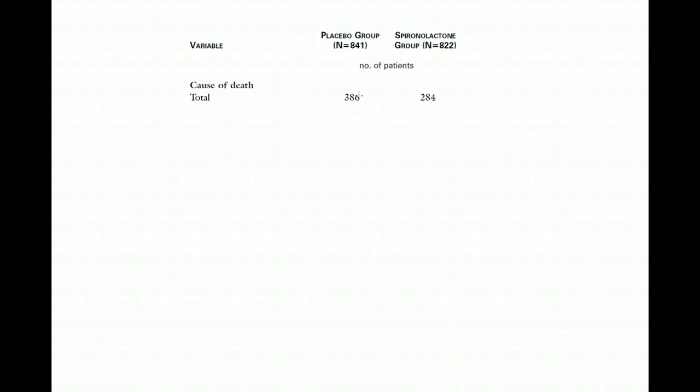So I'd like to express this beneficial relationship of spironolactone on mortality in a clinically useful way. One of the ways I can do that is to calculate something called the number needed to treat, or NNT. Now, a number needed to treat is the number of patients I need to give my new therapy to for the duration of the study to prevent one additional bad outcome.